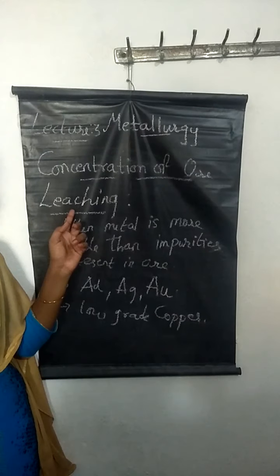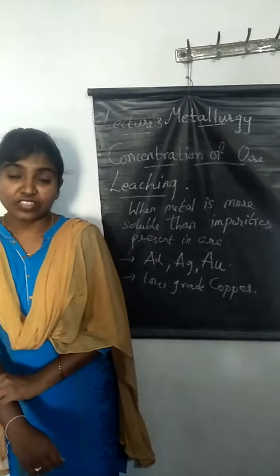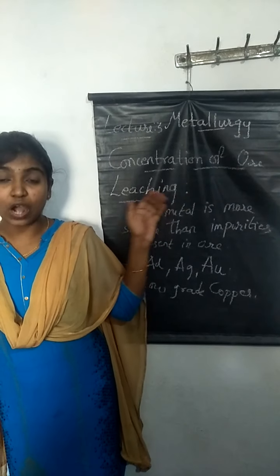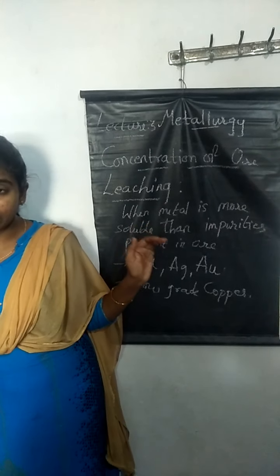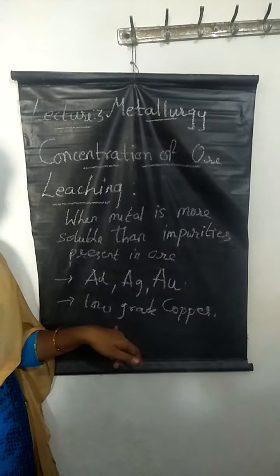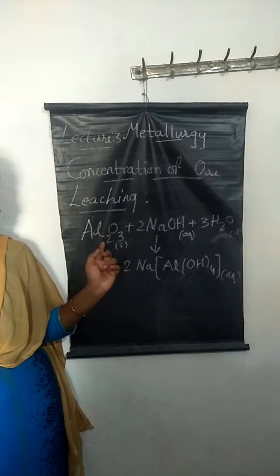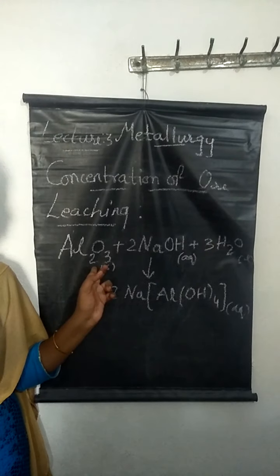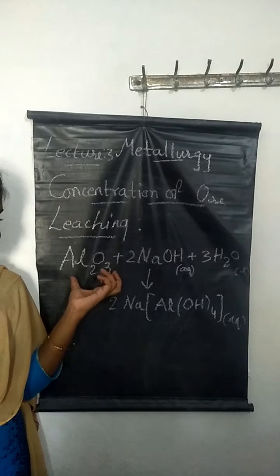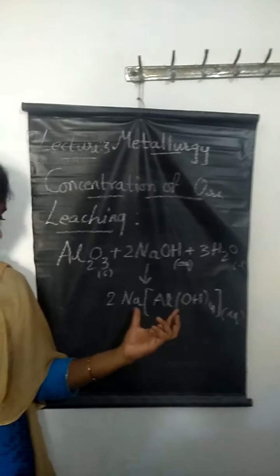The next method of concentration of ore is leaching. Leaching is used when the metal is more soluble in a particular solvent. The leaching process is generally used for aluminium ores like bauxite, silver, gold, and low-grade copper. In leaching of aluminium, we use bauxite ore with sodium hydroxide as the solvent. Aluminium is more soluble in sodium hydroxide, so when bauxite ore is mixed with sodium hydroxide, it forms a complex called sodium aluminate.